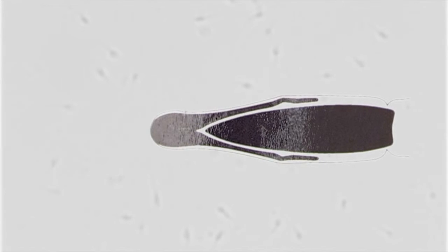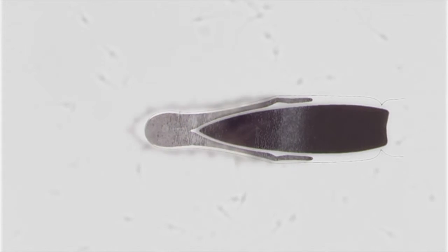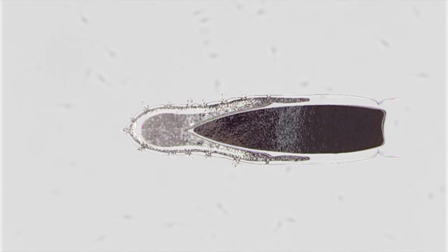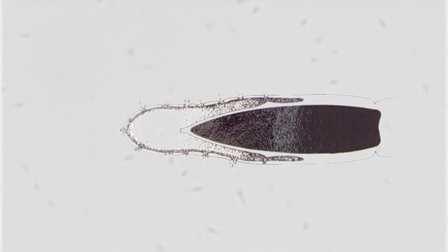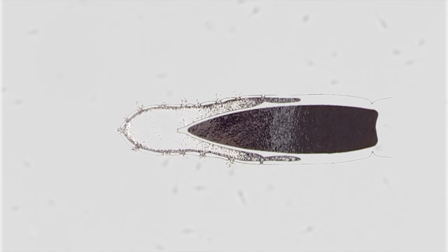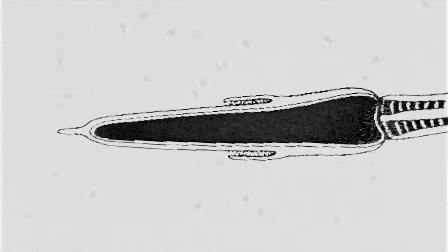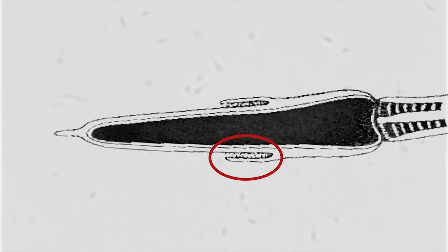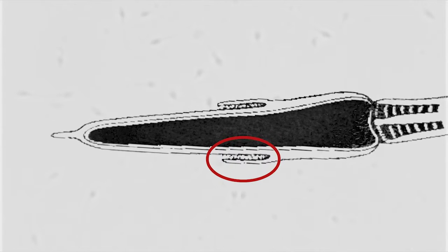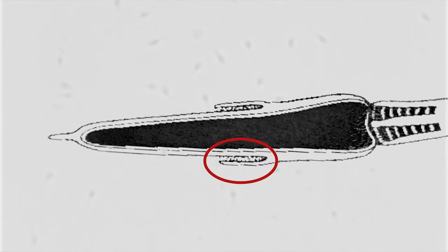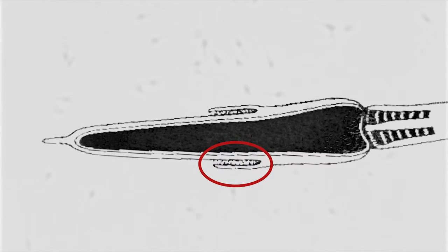When the sperm first encounters the egg, the head begins to be remodeled. The anterior acrosome releases its contents of enzymes, and these help the sperm burrow its way through the vestments that surround the egg.